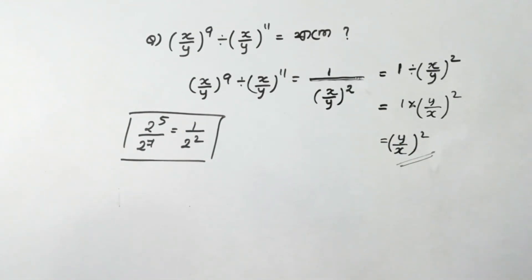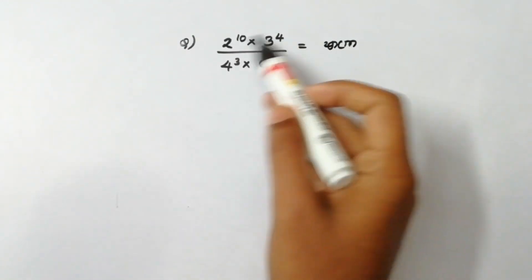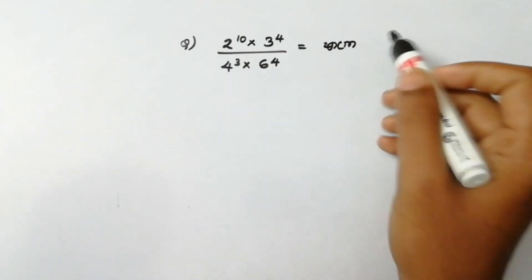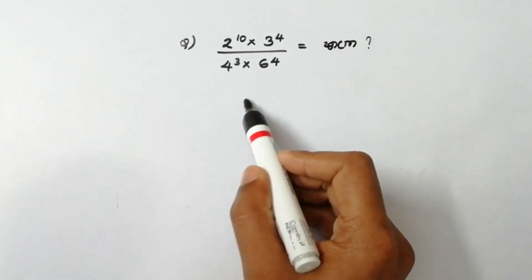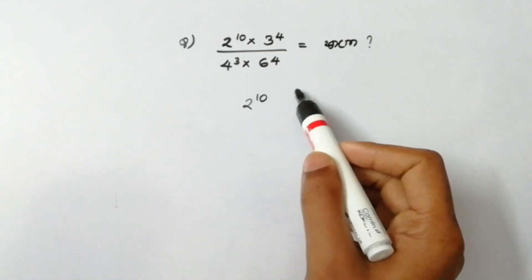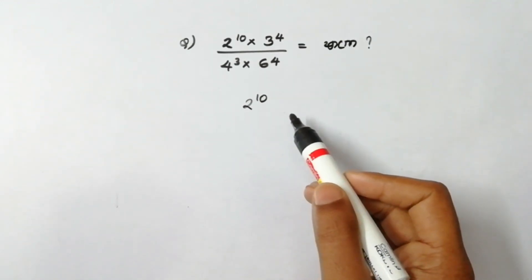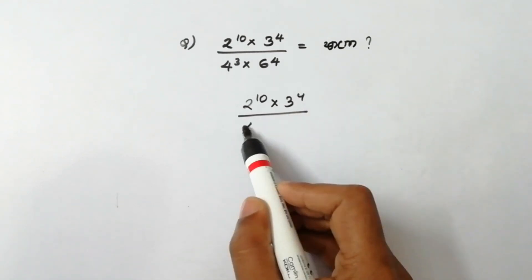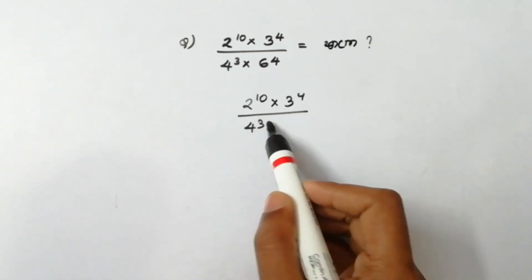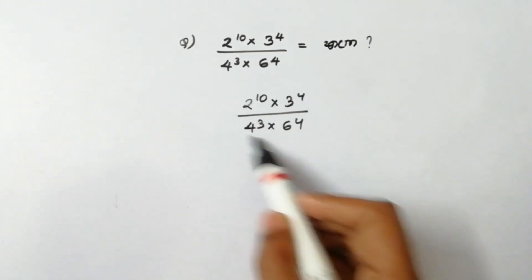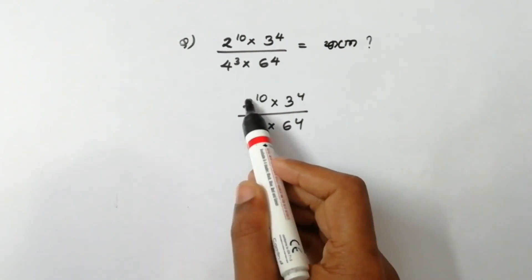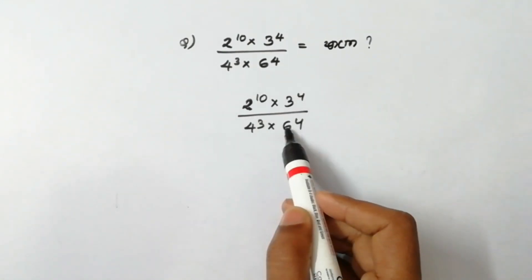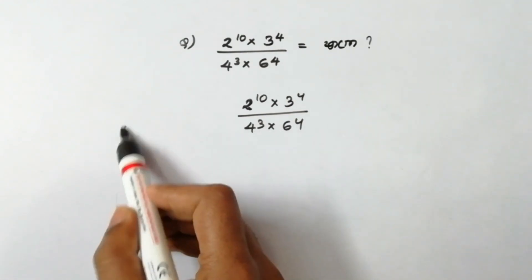If you look at this chapter on repeated multiplication, I will give you the answer. Let's check it out. The next problem is: 2 raised to 10 multiplied by 3 raised to 4, divided by 4 cube multiplied by 6 raised to 4. Now, 4 and 6 are not prime numbers.